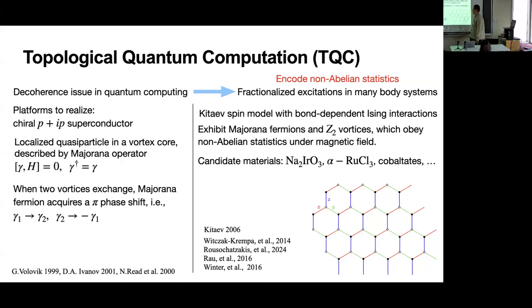There are alternative platforms called the Kitaev spin model. It has bond-dependent Ising interactions - X bond means the interaction is sigma_x sigma_x, and similarly Y bond and Z bond. If you consider such a model with a magnetic field, the model will have a gap and Majorana fermions at Z_2 vortices. They also obey non-Abelian statistics. Candidate materials include iridates like Na_2IrO_3, lithium iridate, and cobaltates.